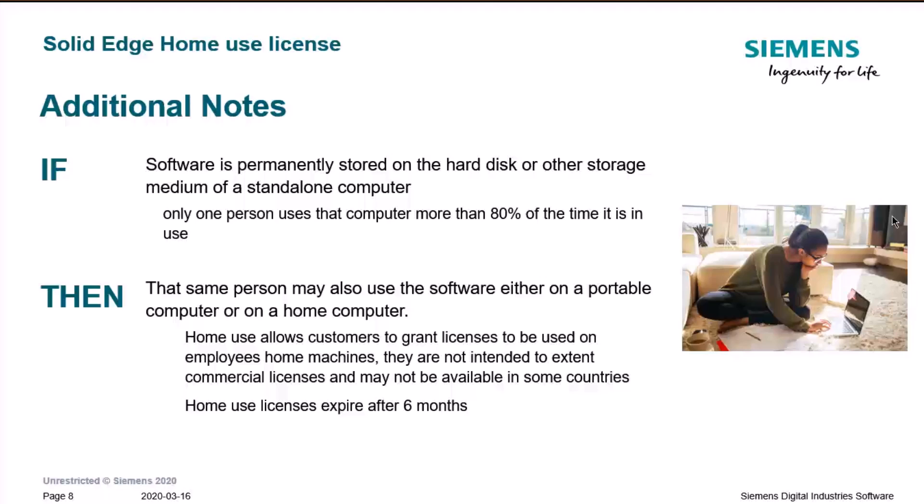Some additional notes on the home use license: keep in mind this is not a production commercial type of license. If software is permanently stored on a standalone computer, only the one person who uses that computer more than 80% of the time may use the home use license. It can be used on a portable or home computer. Home use licenses are not intended to extend commercial licenses and may not be available in some countries. Usually the home license expires after six months.